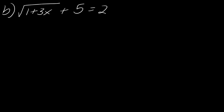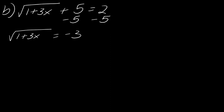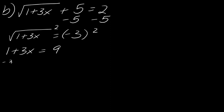Now let's try the next one. I'll start by subtracting off the 5, and I get the square root of 1 plus 3x equals negative 3. You might notice there's an issue right out of the gate — you can't actually have a square root equal a negative number. But if you didn't notice that, I want to show you what happens. So I'll square both sides anyway. Squaring the right side makes it positive, so I get 1 plus 3x equals 9. Solving: 3x equals 8, divide by 3, and x equals 8 over 3.